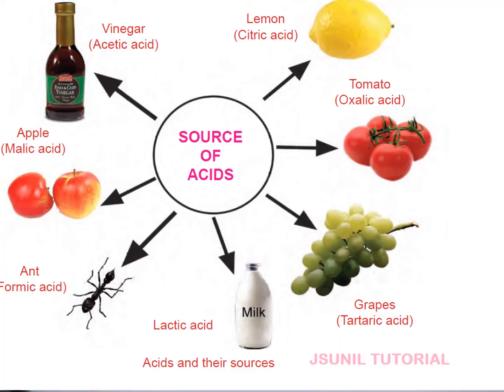Here are examples of acids and their sources: vinegar contains acetic acid, lemon has citric acid, tomato has oxalic acid, grapes have tartaric acid, milk has lactic acid, ants produce formic acid, and apples have malic acid. These are examples of acids found in everyday products and foods.